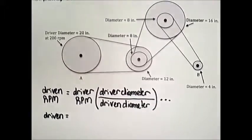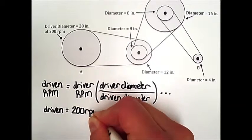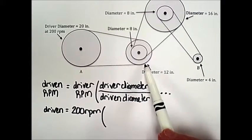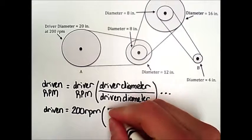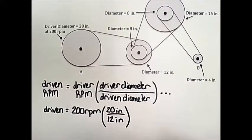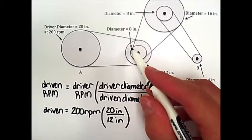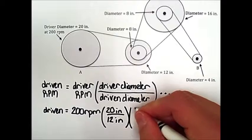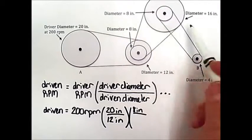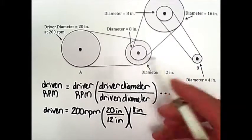Our driven speed equals the initial driver speed of 200 rpm. Pulley A is driving the pulley with a diameter of 12 inches, so pulley A's diameter of 20 inches is divided by 12 inches. This pulley is on the same shaft as the smaller pulley with a diameter of 8 inches, so now that one is the driver — 8 inches on top — and the one it's driving is the pulley with a diameter of 16 inches. So the larger 16-inch pulley is being driven by the 8-inch pulley.